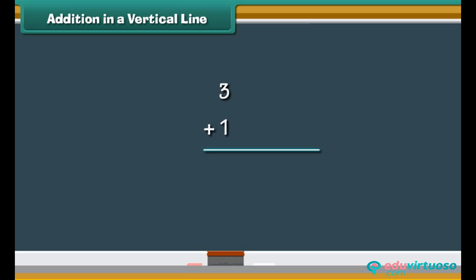What is 3 plus 1? Write the two numbers one below the other. Draw three vertical lines next to 3 and one vertical line next to 1. Count the vertical lines: 1, 2, 3, 4. 3 plus 1 is 4.